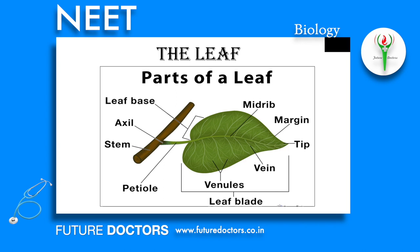Lamina: The lamina or leaf blade is the green, expanded part of the leaf with veins and veinlets. It has a prominent median vein called the midrib. The lamina is the seat of photosynthesis, gaseous exchange, transpiration, and other metabolic activities. The surface and extent of incision of the lamina varies in different leaves. Veins provide rigidity to the leaf blade and act as channels of transport for water, minerals, and food materials.